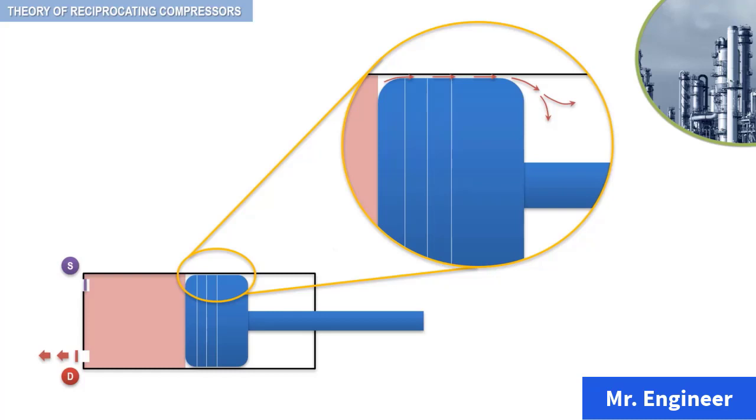This leakage causes both a volumetric and a horsepower loss, in addition to an increase in discharge temperature. The concept of piston ring leakage will be re-discussed in detail in the mechanical design section of this course.